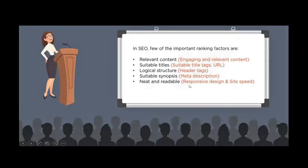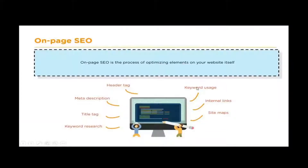In SEO we have on-page SEO and off-page SEO. You need to pay more attention to your on-page SEO, although off-page also matters. The on-page SEO is the process of optimizing elements on your website itself — it covers the header tags, meta description, title tag, keyword research, internal links, and sitemaps.